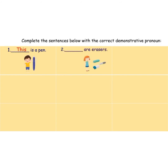Second one: 'Dash are erasers.' Fill in the blank. The answer is: 'These are erasers.' Third one: 'Dash is my sister.' Fill in the blank. The answer is: 'This is my sister.'